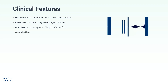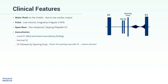On auscultation, the first heart sound, or S1, is loud, and it may be the most prominent auscultatory finding in mitral stenosis. The second heart sound, or S2, is normal. S2 is followed by the opening snap, which is due to the sudden opening of the stenotic yet pliable mitral valves. The distance between S2 and the opening snap can give an indication of the severity of stenosis — the closer the opening snap follows S2, the worse the stenosis. The opening snap is followed by a murmur, which is a low-pitched mid-diastolic rumble, and then presystolic accentuation.